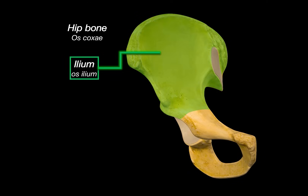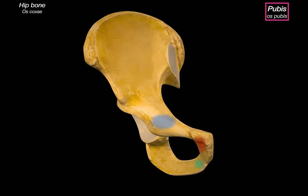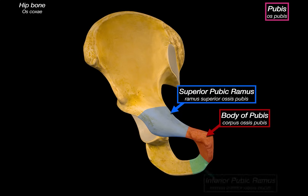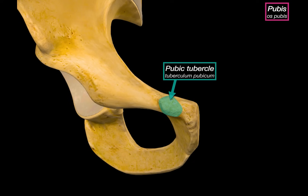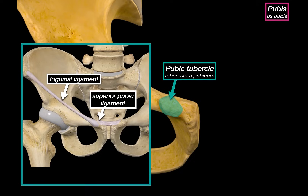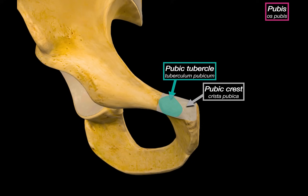Now let's move on to the pubis. The pubis is divided into three main parts: the superior pubic ramus, the body, and the inferior pubic ramus. On the anterior surface of the body, we find the pubic tubercle — a small projection serving as an important attachment point for both the inguinal ligament and the superior pubic ligament. Just medial to the tubercle is the pubic crest, and right next to it is the symphysial surface.